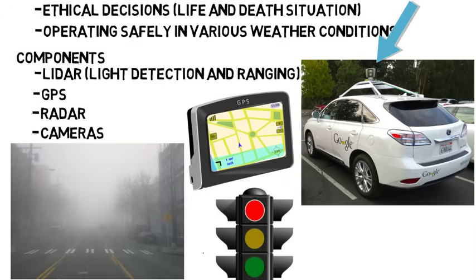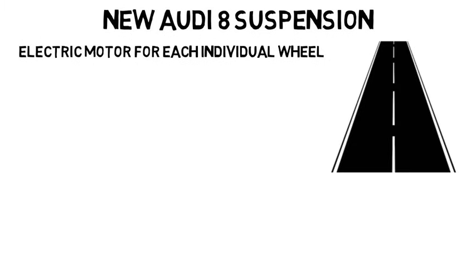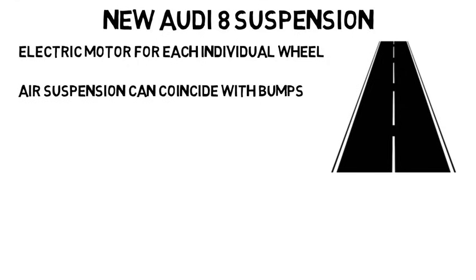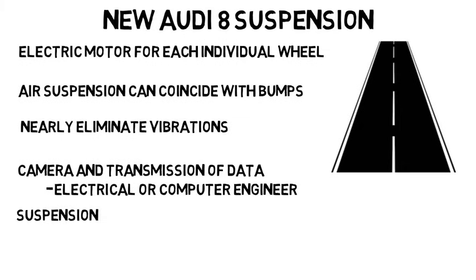Even though self-driving cars seem to be the main thing happening, other aspects of cars are also being optimized. Take the new Audi A8 suspension — this system incorporates an electric motor for each individual wheel. A front camera reads the road and detects bumps so that the air suspension can coincide with those bumps, and with those precise reactions, you can nearly eliminate vibrations. Working with the camera and data transmission could be handled by an electrical or computer engineer, while the suspension system and vibration testing would be done by a mechanical engineer.